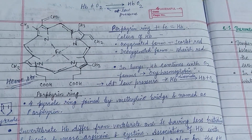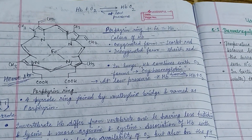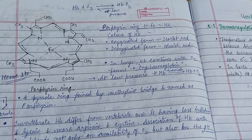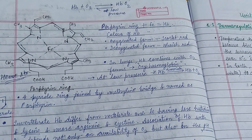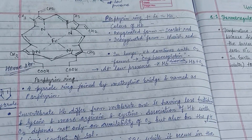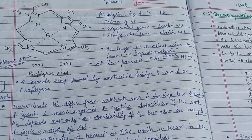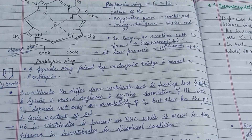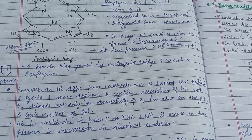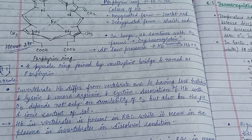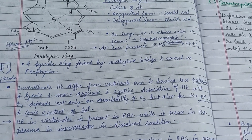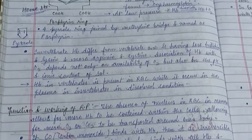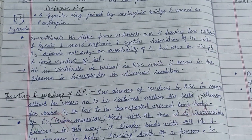Regarding the heme structure: Hb + O₂ forms HbO₂ at low pressure, and again dissociates into Hb + O₂. Porphyrin ring plus ferrous iron forms hemoglobin. In the oxygenated form hemoglobin gives a scarlet red color, while in the deoxygenated form it gives a bluish-red color. Four pyrrole rings joined by methylene bridges form the porphyrin ring.